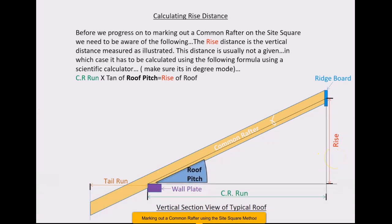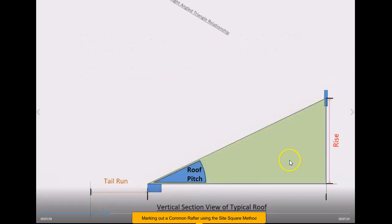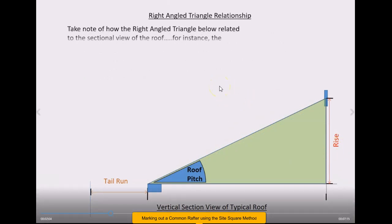That gives you the distance to measure up on one leg of the square. Just to illustrate what pitch basically means, it goes from a zero degree up to this degree here, which might be 35 degrees or whatever. In this case, there's your rise distance there.